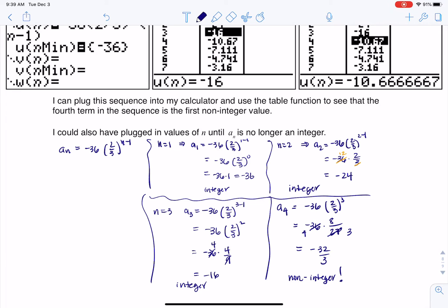All right, so that means once I finally got to the fourth term, we had our first non-integer. And that's why you see me saying the fourth term in our sequence is the first non-integer value. All right, so there is number 57. Thanks so much. Bye.